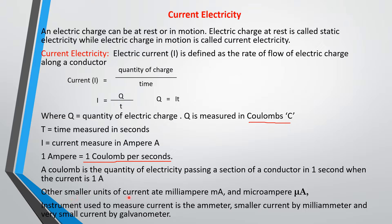Other units of current include the milliammeter and microammeter. The instrument used to measure current is the ammeter. We have the ammeter for measurement of current, the milliammeter for measurement of small current, and very small currents are measured using a galvanometer. In your school laboratory you might have a galvanometer or a milliammeter for current electricity experiments.